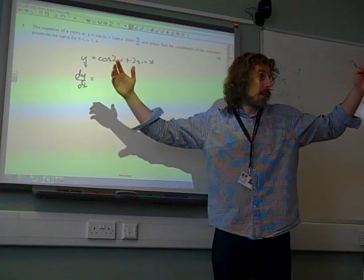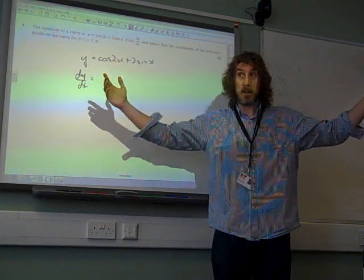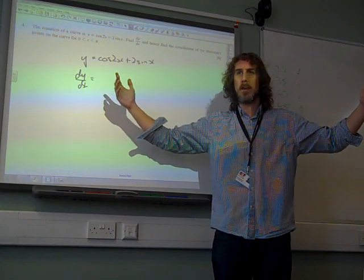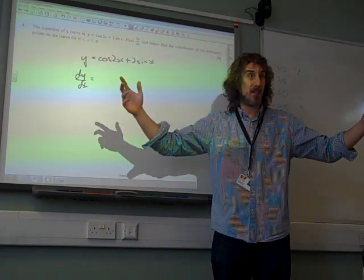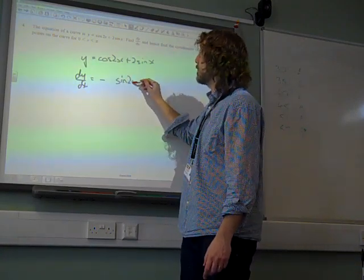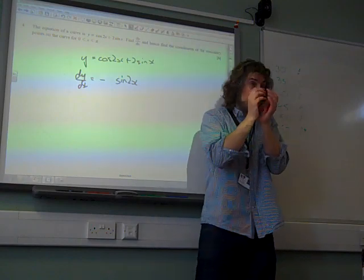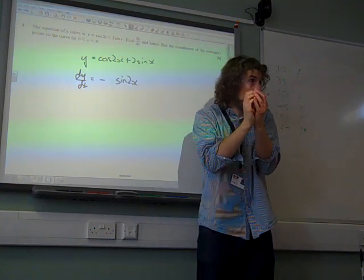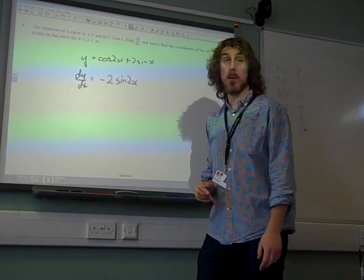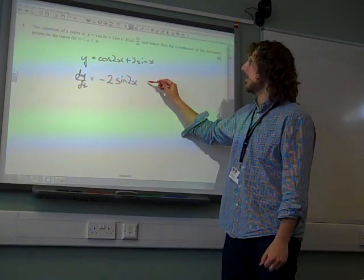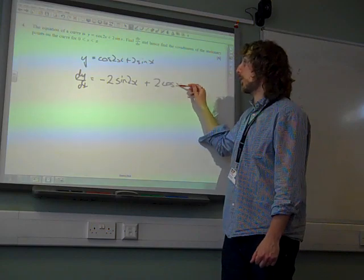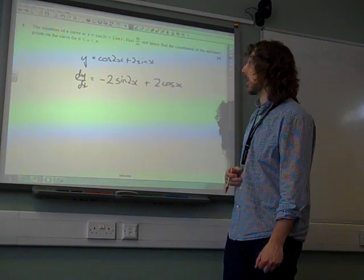So the big thing is cos of something, it's a chain rule, isn't it? Cos differentiates to minus sine, doesn't it? So we've got minus sine 2x, but we've also got to multiply by the derivative of the inside bit, which is 2x, which differentiates to 2. So we've got minus 2 sine 2x. And if we differentiate 2 sine x, we get 2 cos x. So that's what dy by dx is.